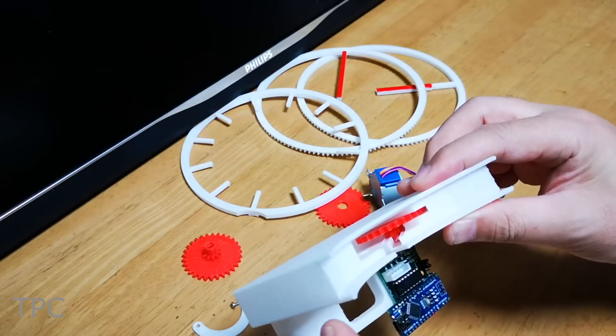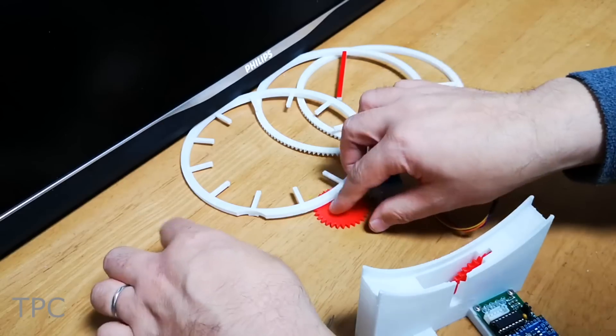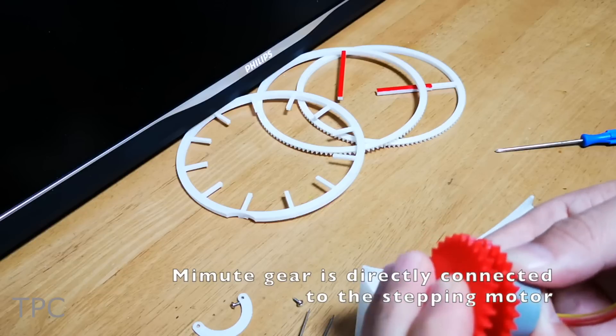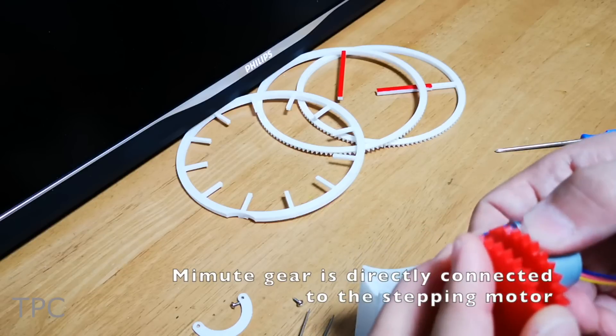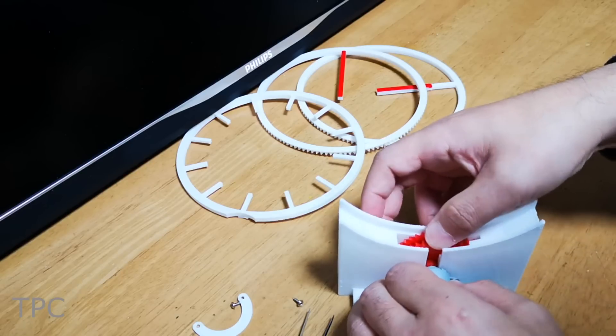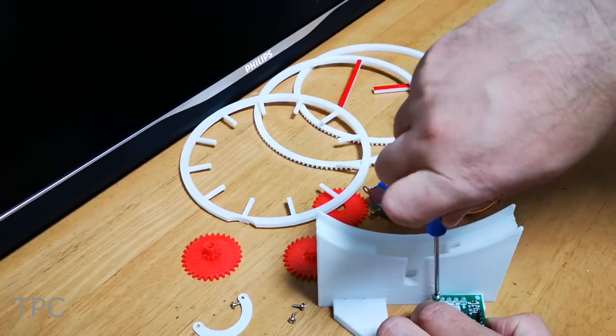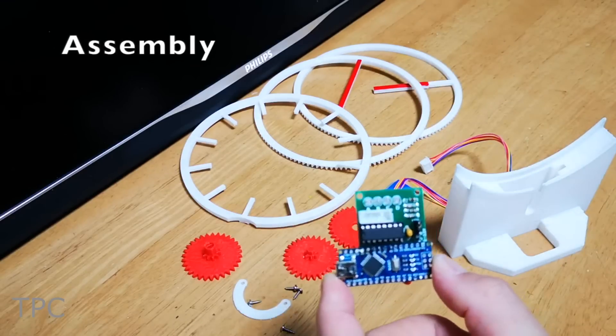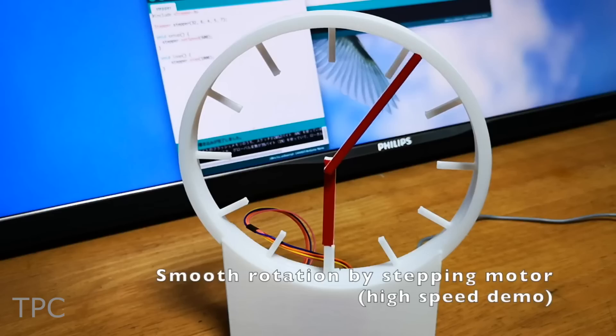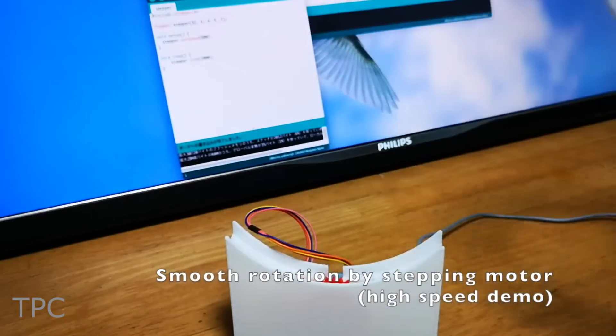First, the reduction gear is set by sliding it into the 3D printed frame. The minute driving gear is directly connected to the shaft of the stepper motor, while the hour driving gear is held by the minute gear axis. This arrangement fits in the frame in such a way that the reduction gear comes between the hour hand and the minute hand gear. To make the design compact, an Arduino is directly soldered to the motor driver. Once the stepper motor is connected to the motor driver and the code gets uploaded, the gears move the minute and hour hand wheels to display time.